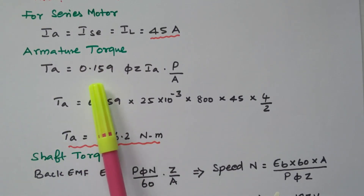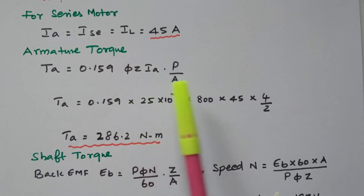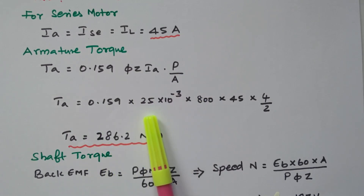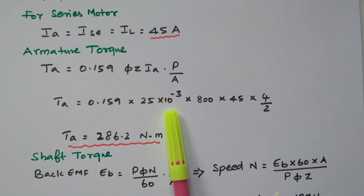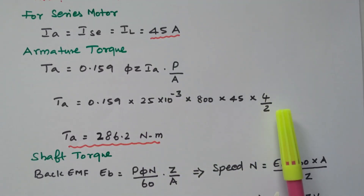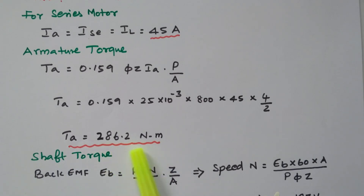Now we will find the armature torque. T_A equals 0.159 into flux into Z into IA into P divided by A. That is: 0.159 into 25 into 10 to the power minus 3 into 800 into 45 into 4 divided by 2. By simplifying this, we get 286.2 Newton meter. The torque developed in the armature is 286.2 Newton meter.